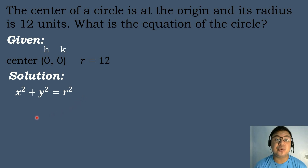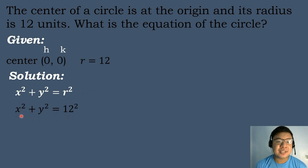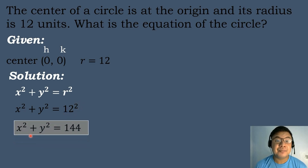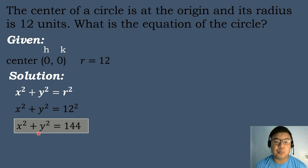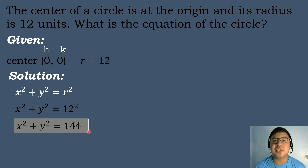All we need to do is substitute the value of the radius, which is 12. We bring down x squared plus y squared equals 12 raised to the second power. Simplifying, 12 squared equals 144. Therefore, the standard equation of the circle is x squared plus y squared equals 144.